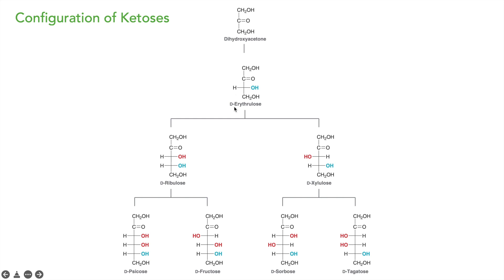Adding one carbon with the hydroxyl on the same side gives D-ribulose; on the other side gives D-xylulose. Continuing: hydroxyl on one side gives D-psicose, the other side gives D-fructose. For the next level, one side gives D-sorbose and the other gives D-tagatose. This process generates all ketose structures.